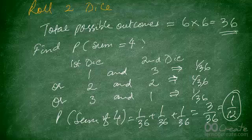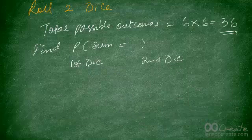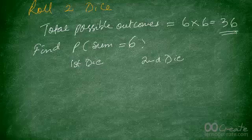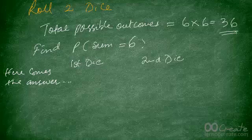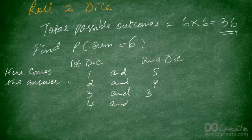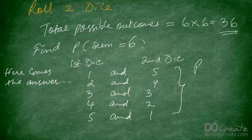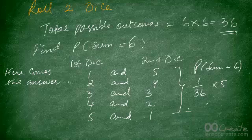I'm going to give you a question — I want you to figure out the probability of getting a sum of 6 when you roll 2 dice. Pause the video and see what answer you get. The combinations that give you a sum of 6 are: 1 and 5, 2 and 4, 3 and 3, 4 and 2, and 5 and 1. Since each of these has a probability of 1 out of 36, the probability of getting a sum equal to 6 is 5 out of 36.